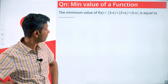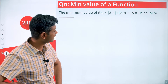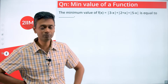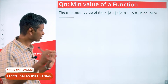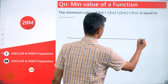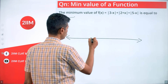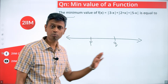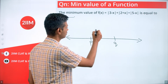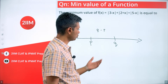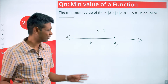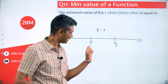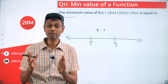Find the minimum value of f(x) = |x - 3| + |x + 2| + |5 - x|. This is a beautiful question to start with. We need to understand one key idea: given two points on the number line, the distance between them is simply the larger number minus the smaller number — for example, 5 minus 4, or 7 minus 3.